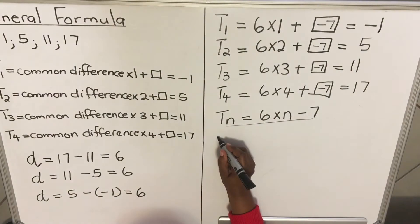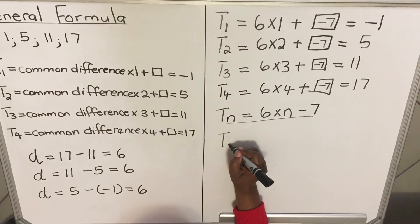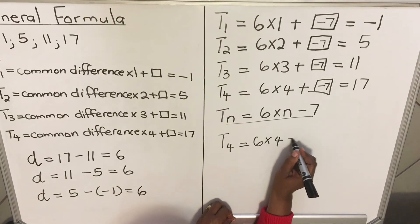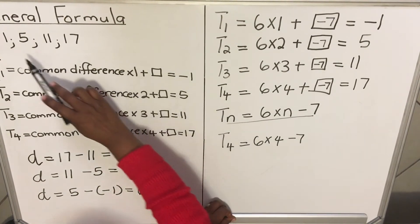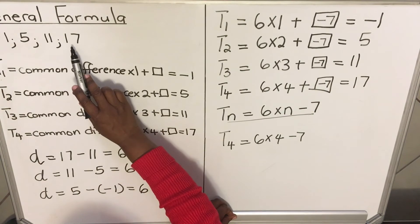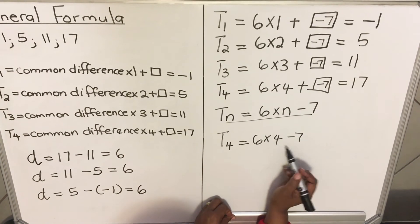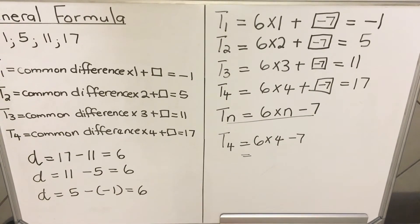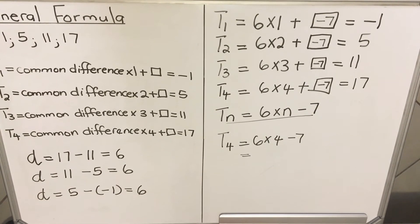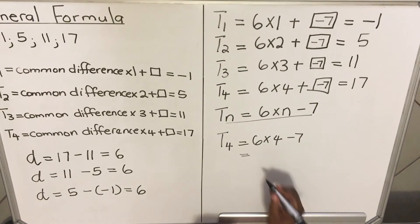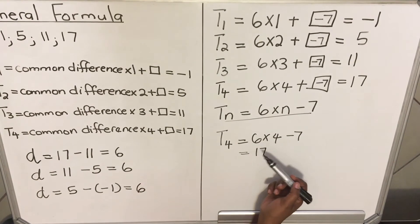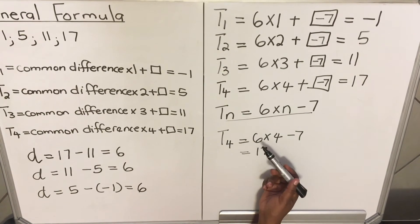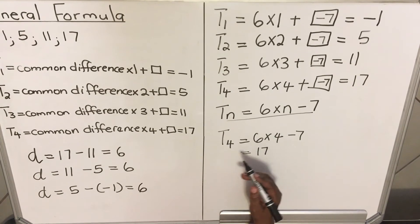Let's check if it's correct. For Term 4: put n = 4, so 6 times 4 minus 7. Our fourth term is 17 — that's what we're expecting. 6 times 4 minus 7 equals 17. It's correct.